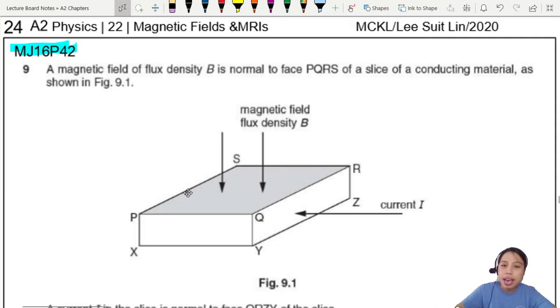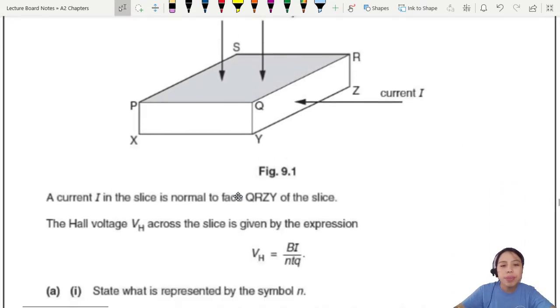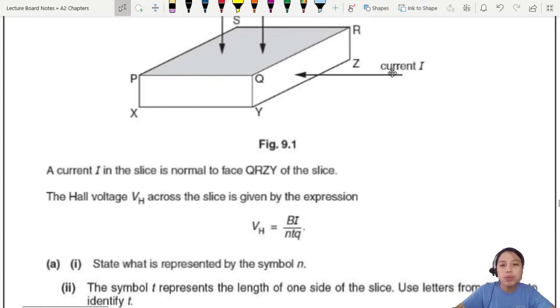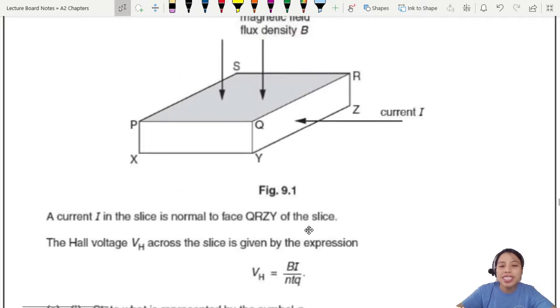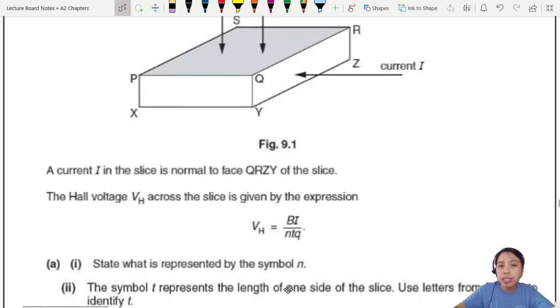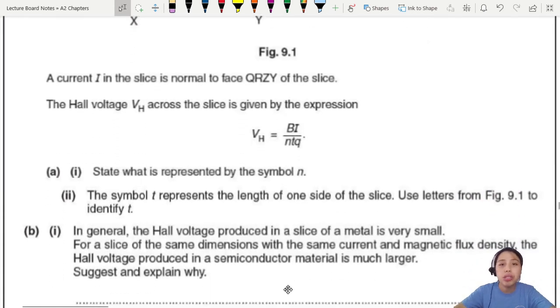So we have here a Hall probe, a slice of conducting material as shown. You've got magnetic field going into the probe, and the current flowing into the side face of this slice of conductor. The Hall voltage is this expression. Very nice, they give us this equation. But it's best if you also know where it came from and how to derive it.